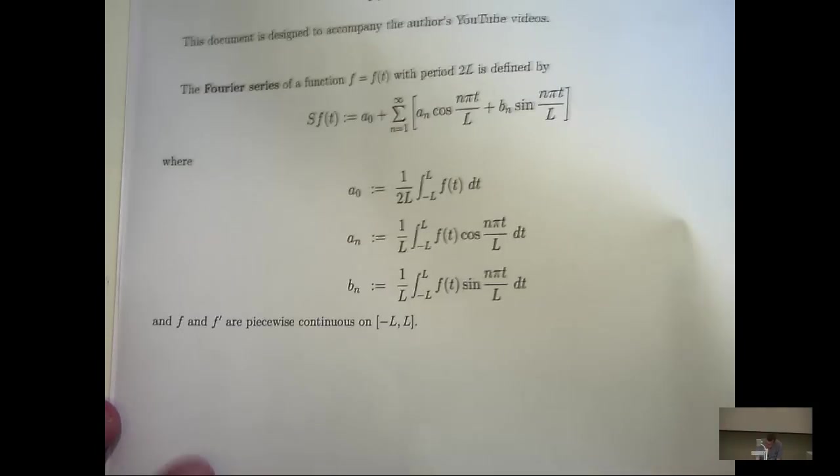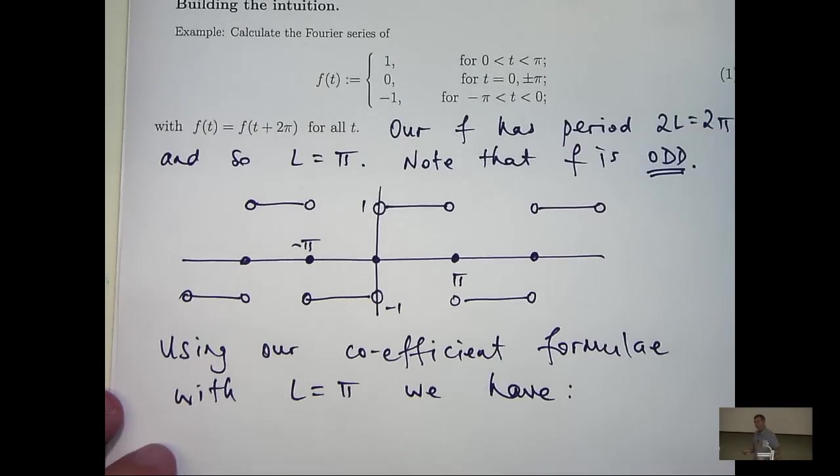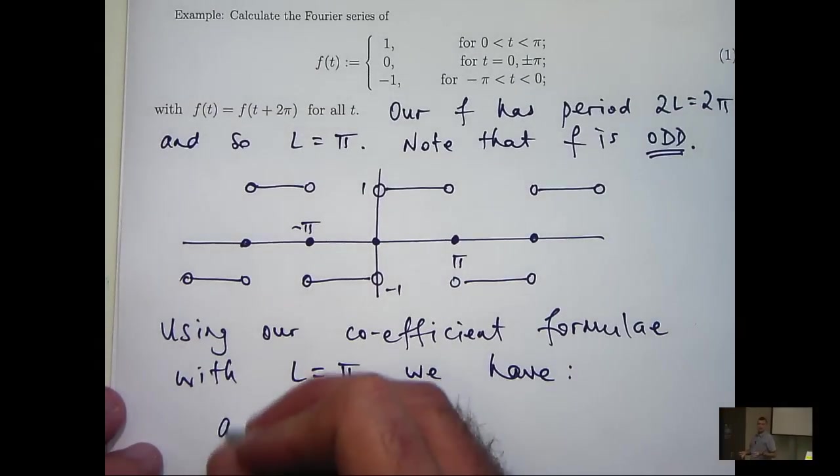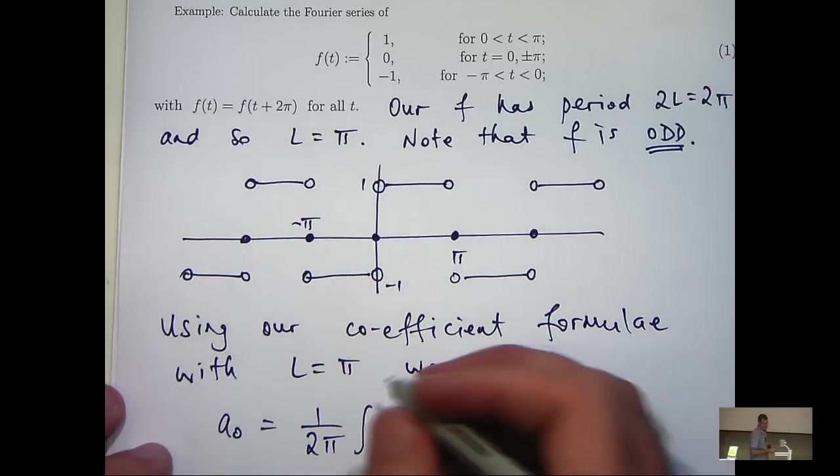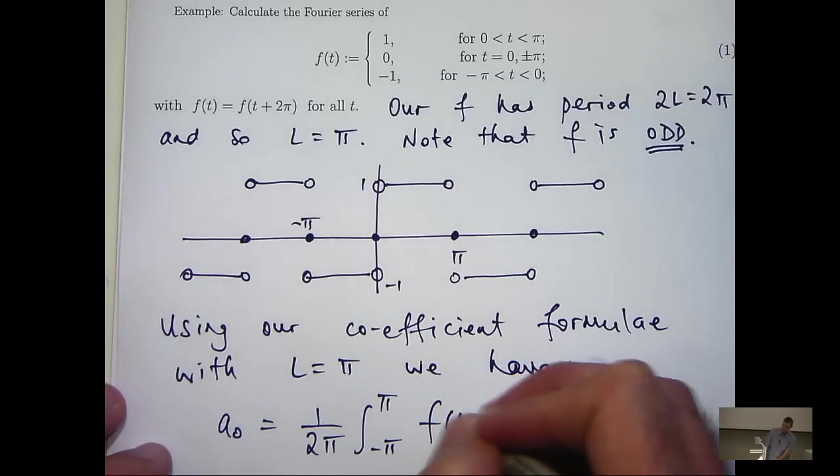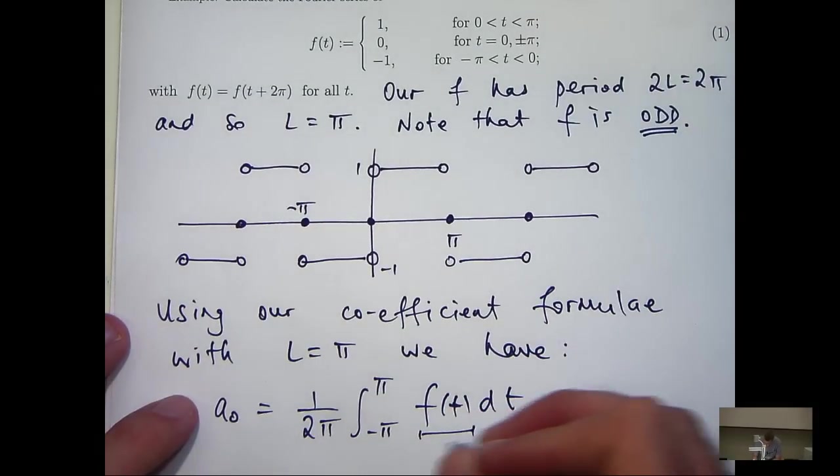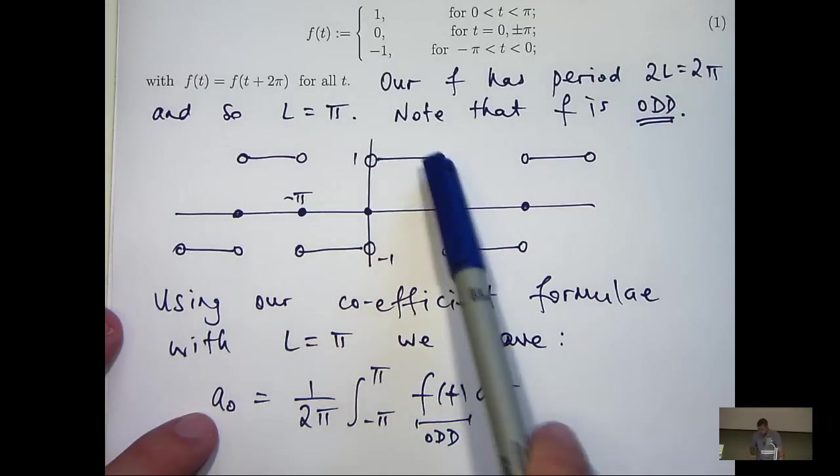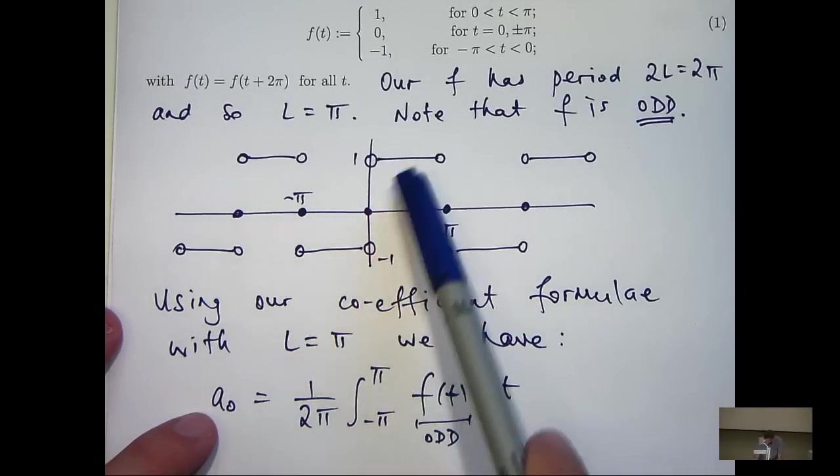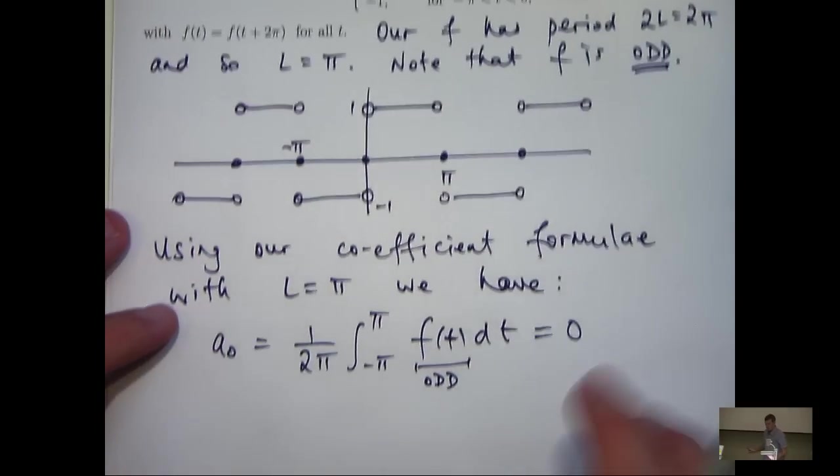Okay, let's calculate our Fourier coefficients using our formulae on the previous page. So the first and easiest one is A0. So let's put this in and see if we can simplify. Now, we've identified f as being odd. Now, because we're integrating from minus π to π, you can think of it as the area here and the area here. Now, this would be negative, this would be positive, and they'll cancel each other out. So that was pretty easy.